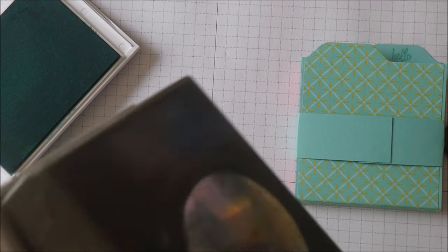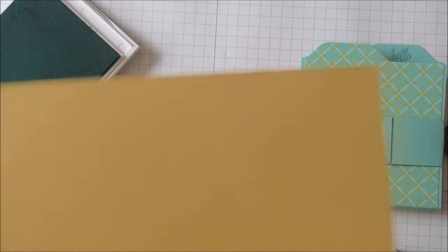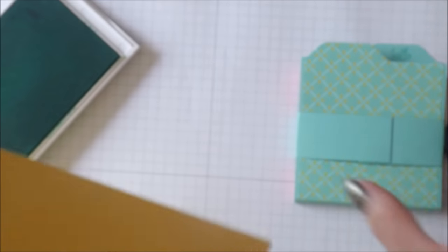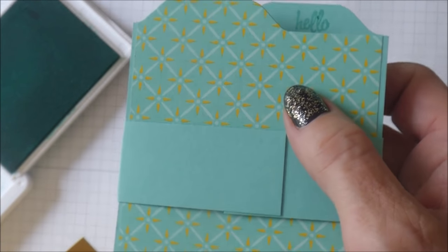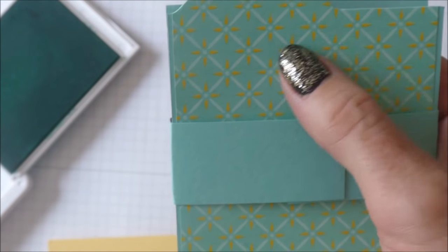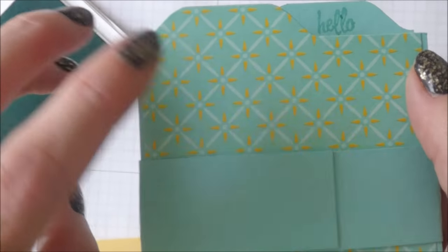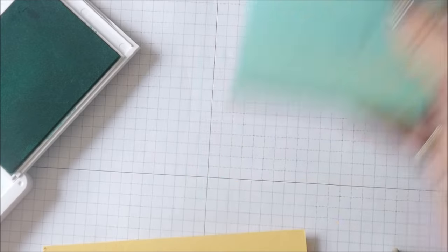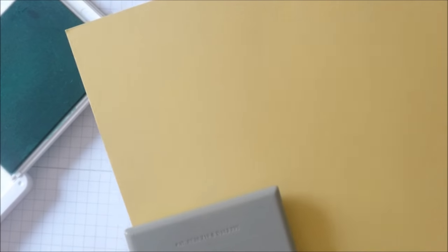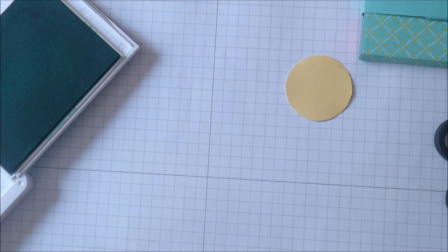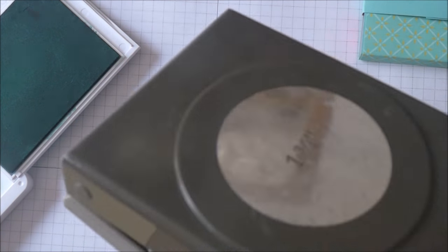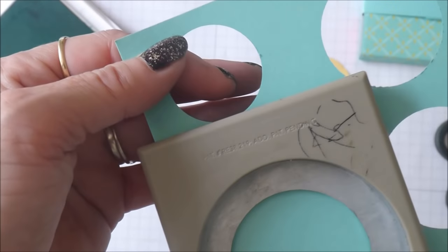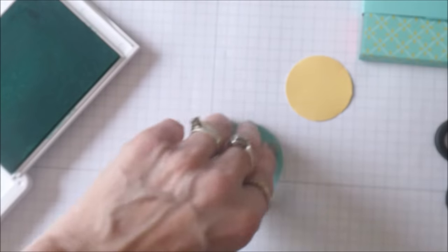I've got my 1.5 inch circle punch here and some scrap So Saffron cardstock. This is the Tea Room Special DSP papers that I'm using here. On the front of the packet it states that this yellow is Crushed Curry, well I don't have any, so I'm using So Saffron and it actually tones really well. With my 1.5 inch circle punch, I'm just going to punch that out. I'm also going to use my 1 3/4 inch circle punch to punch out a piece of Coastal Cabana, and I'm going to layer these all on each other.